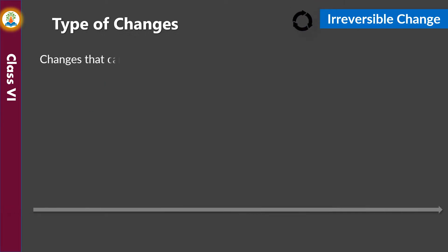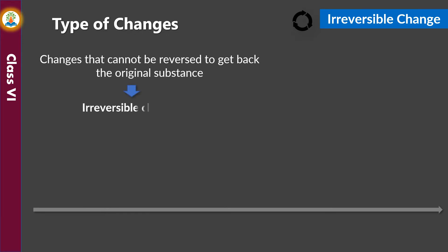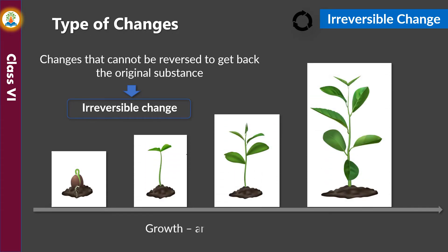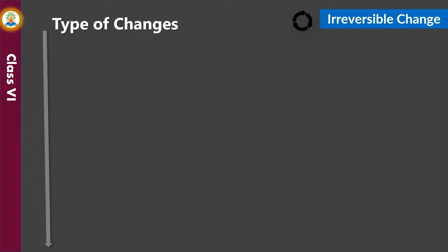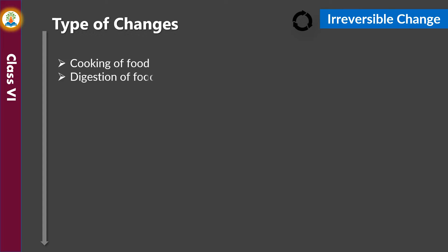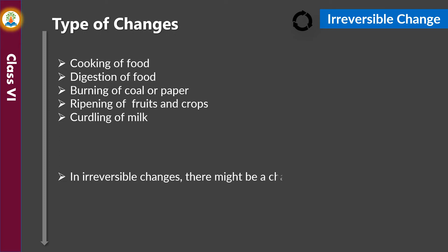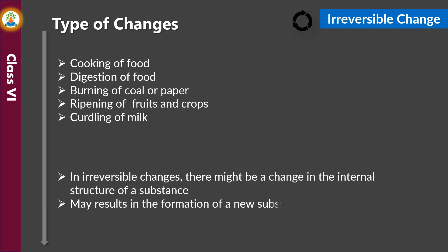Changes that cannot be reversed to get back the original substance are called irreversible changes. Growth is an irreversible change. Examples of irreversible changes are cooking of food, digestion of food, burning of coal or paper, ripening of fruits and crops, and curdling of milk. In irreversible changes, there might be a change in the internal structure of a substance, and it may result in the formation of a new substance.